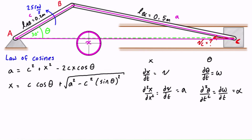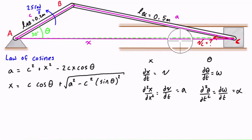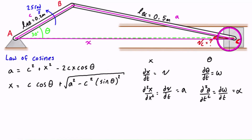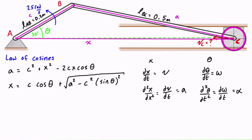Just to make that clear: the quantity x is what's changing over time. As x shrinks, dx/dt equals the speed vc, and d²x/dt² equals the acceleration of point C if you need that quantity.